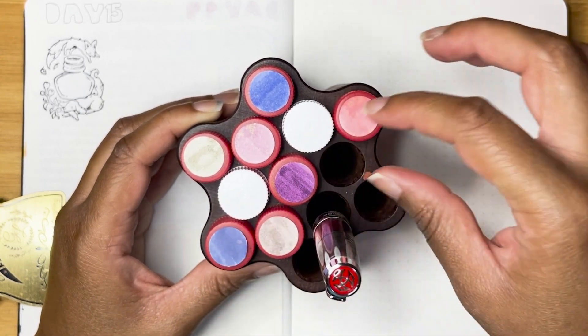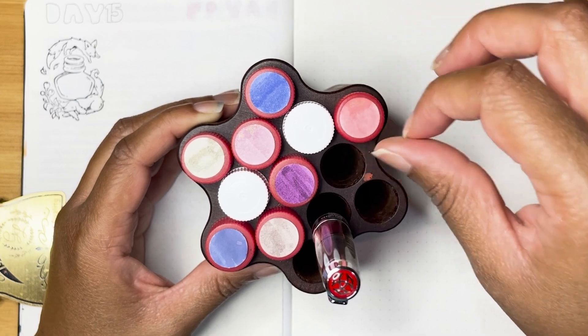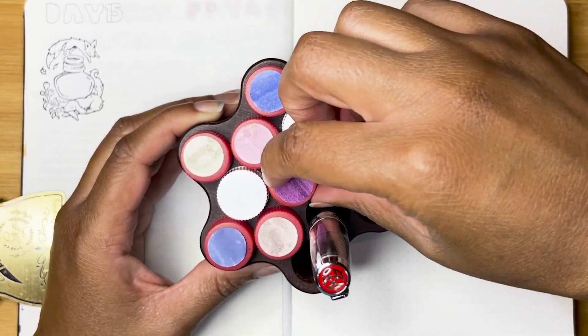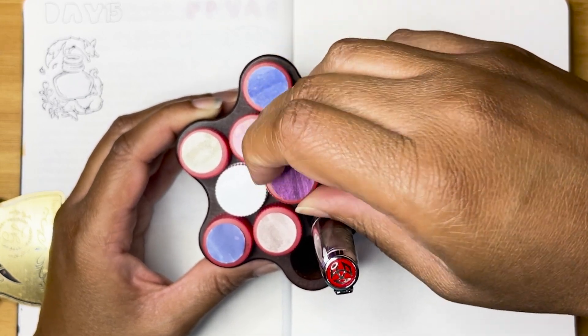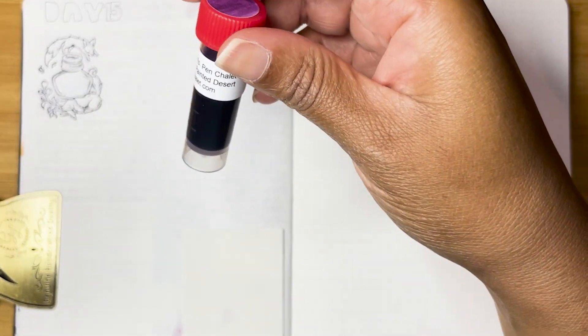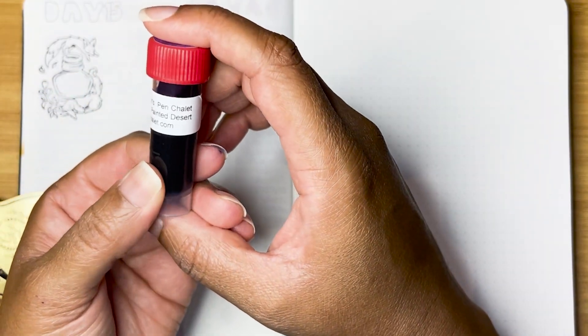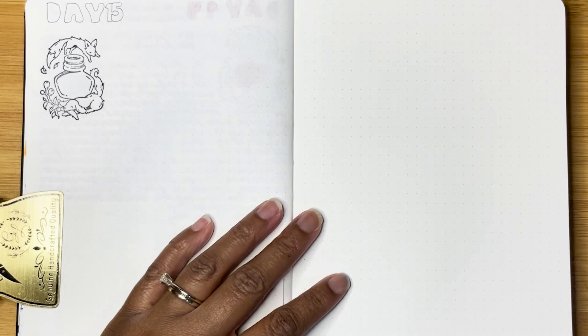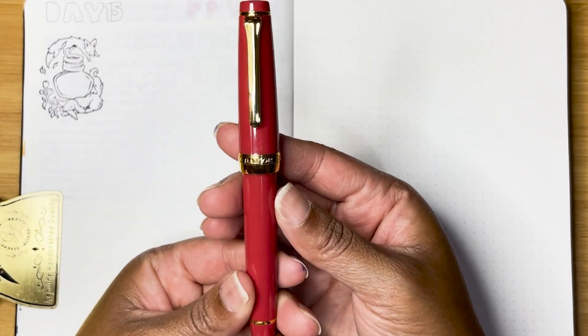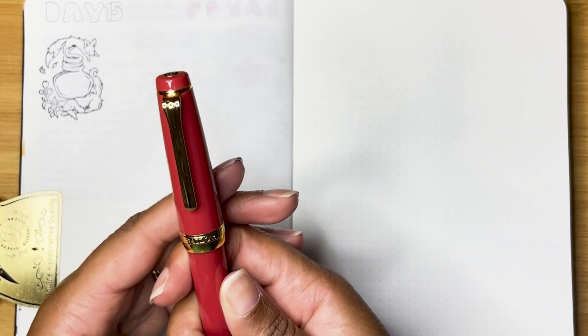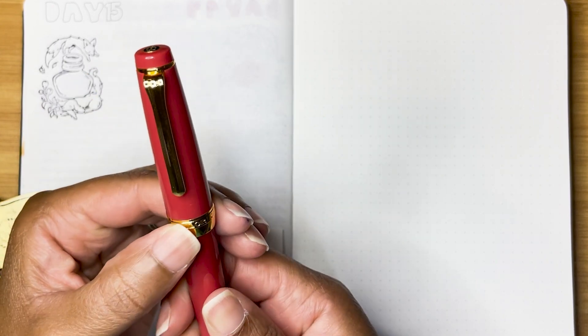And I think I'm going to go with, let's see, I don't know this color. Okay, Van Dieman's Pen Chalet exclusive Painted Desert. And the pen I picked today is the Sailor. We're going to start pulling some of my Sailor pens. This is the Autumn Sky.